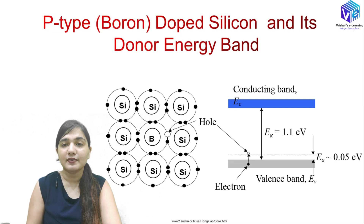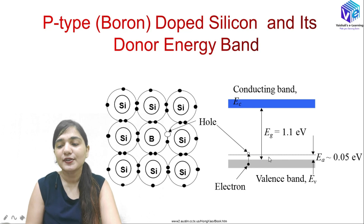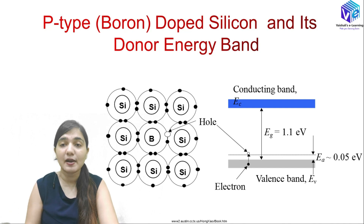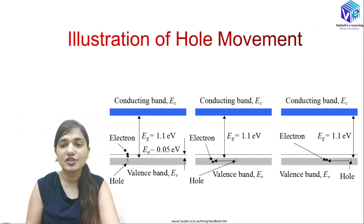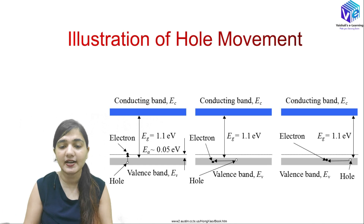For P-type material, doping causes holes to form, and the acceptor energy level of the conduction band comes down. Here also, the effective energy gap is around 0.05 eV. Through different types of doping, we can change the acceptor energy level, resistivity, conductivity, and other electronic parameters as needed.